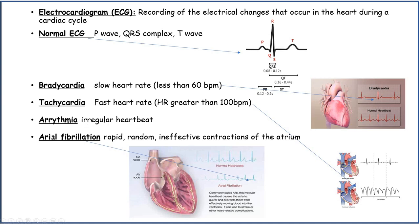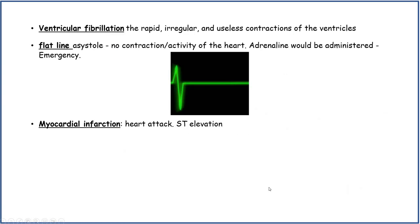Arrhythmia is an irregular heartbeat. Atrial fibrillation is rapid, random, ineffective contractions of the atrium, so the PQRST waves are not evenly spread apart. Ventricular fibrillation is rapid, irregular, and useless contractions of the ventricles. A flat line is asystole — basically no contraction or activity of the heart — and this is where you would use adrenaline or a defibrillator, because it means the heart has stopped. A myocardial infarction is a heart attack, and you would see an ST elevation on the ECG.